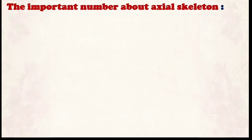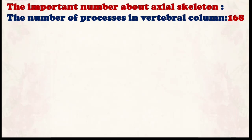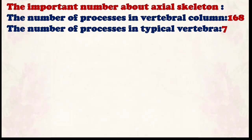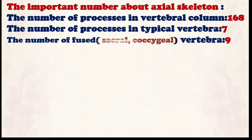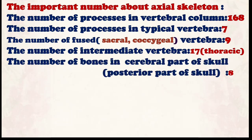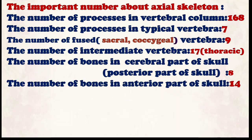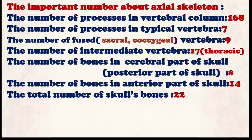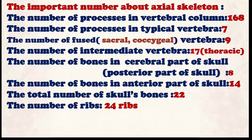Now for the important numbers about the axial skeleton: the total number of processes in the vertebral column is 168. The number of processes in a typical vertebra is 7. The number of fused sacral and coccygeal vertebrae is 9 (5 sacral plus 4 coccygeal). The number of articulating vertebrae is 17 (also referred to as thoracic-related). The number of bones in the cerebral or posterior part of the skull is 8, and the number of bones in the anterior facial part of the skull is 14. The total number of skull bones is 22.